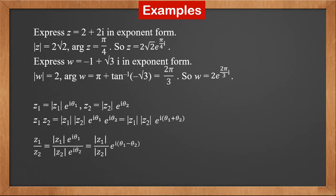From these, we can see exponential form is a simpler version of polar form. Similarly, z1 over z2 is z1's modulus times e to i theta 1, over z2's modulus times e to i theta 2. This is z1's modulus over z2's modulus times e to i(theta 1 minus theta 2). So when we divide two complex numbers, we divide their moduli and subtract their arguments.